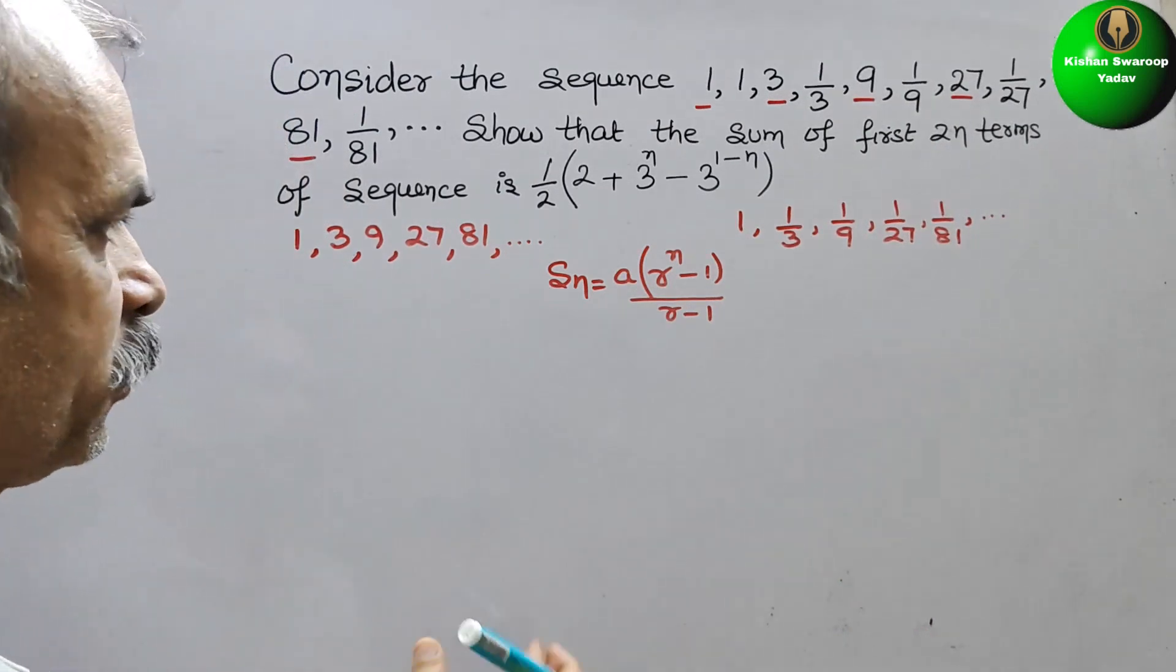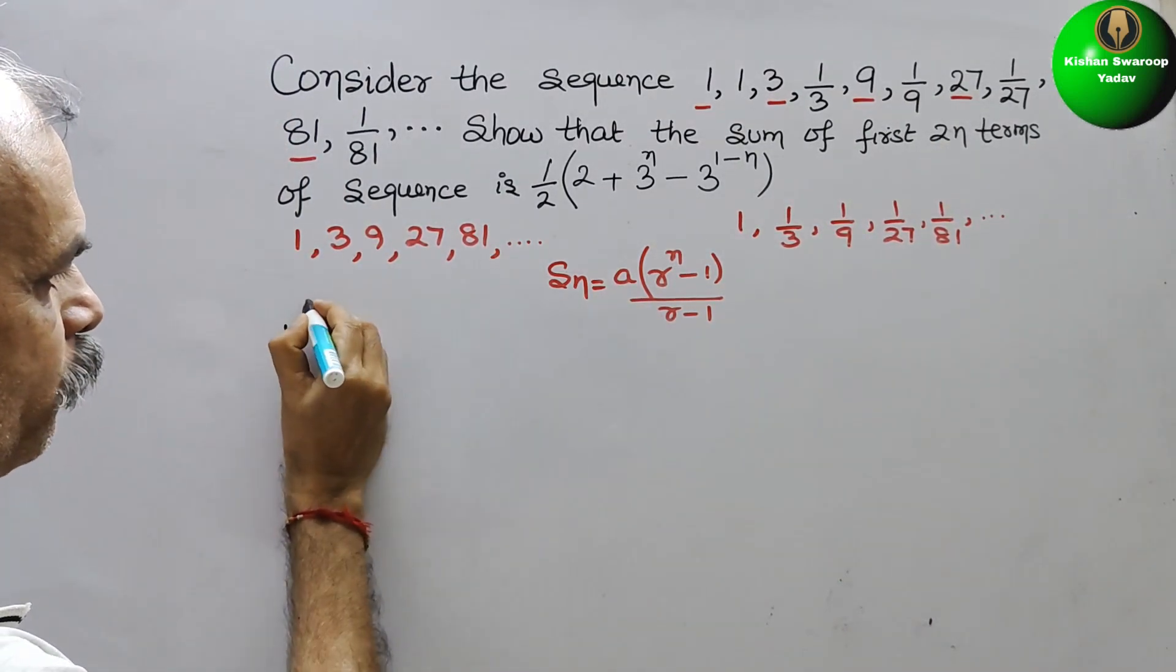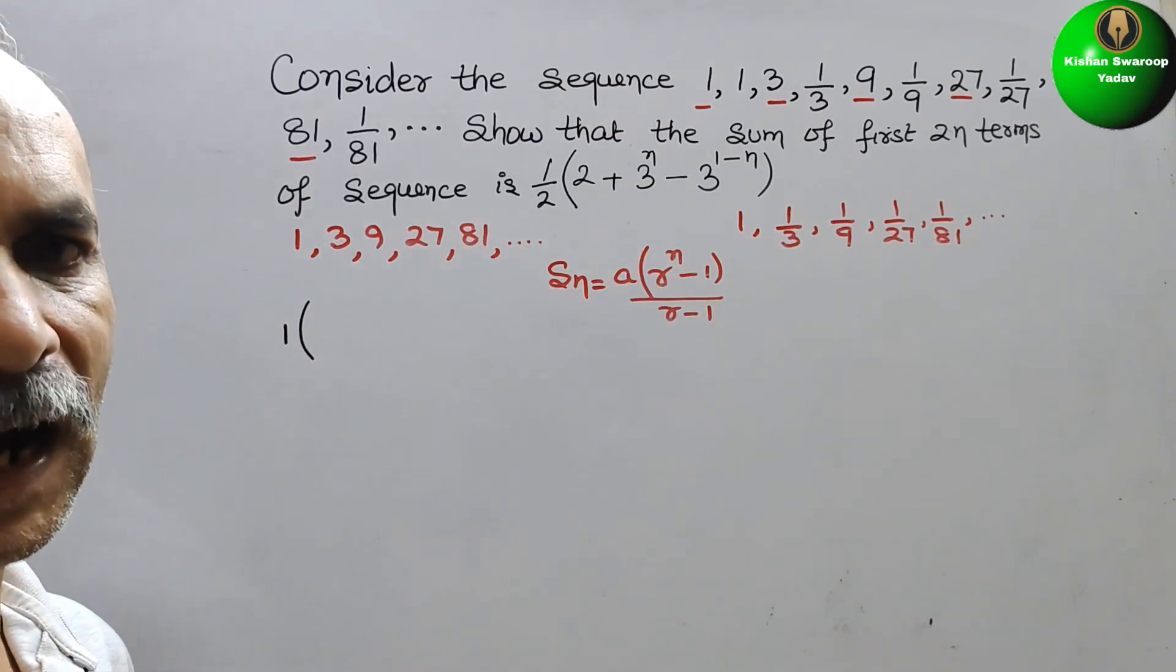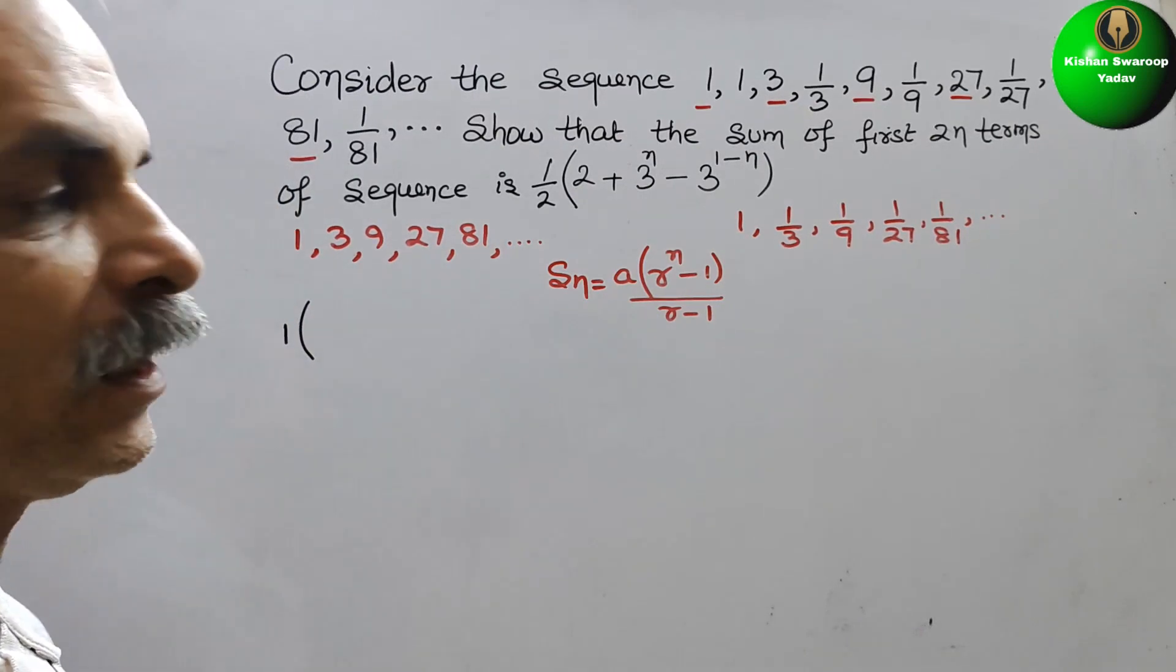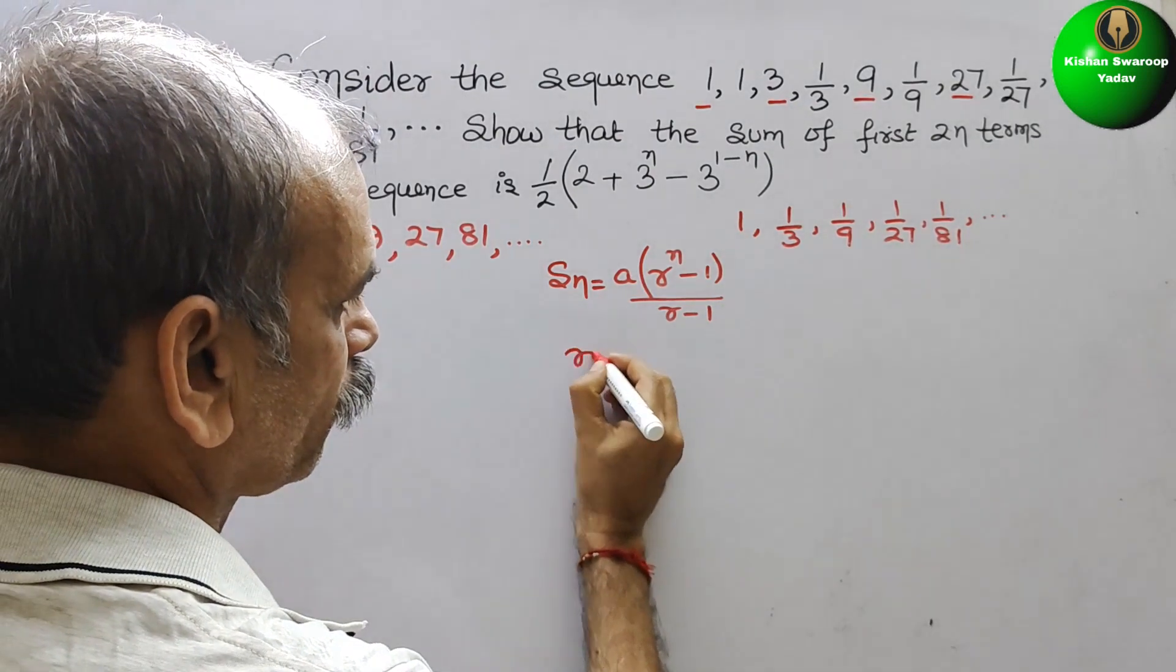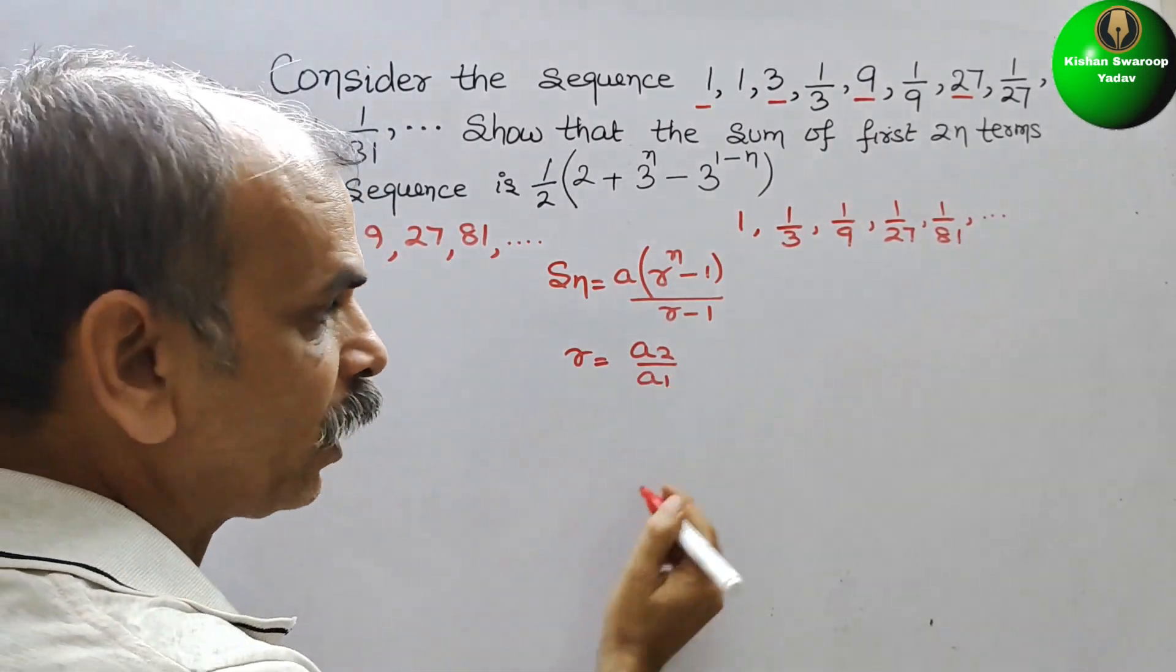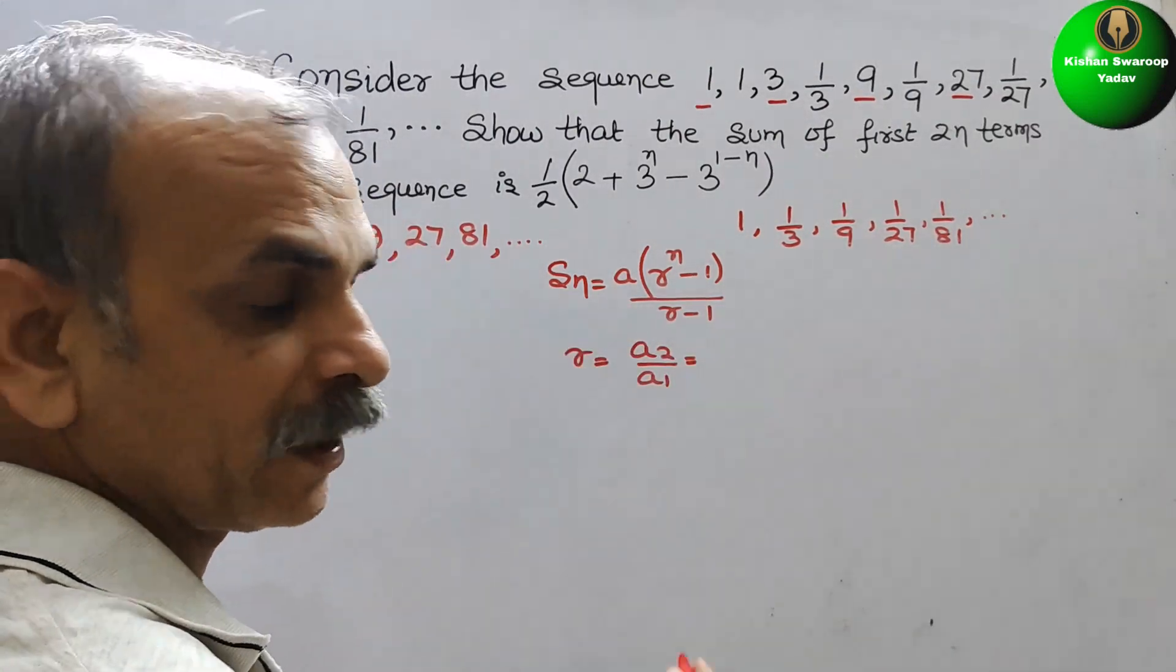Now see this. a is 1, so we will write 1. What is your r? r is nothing but a_2 by a_1. Now this is nothing but 3 divided by 1.